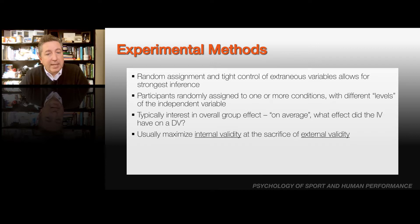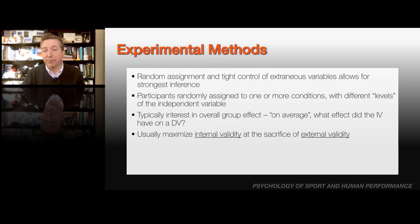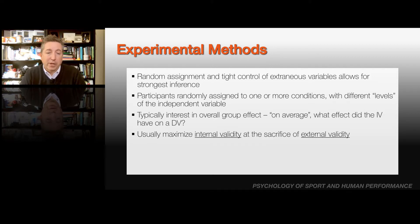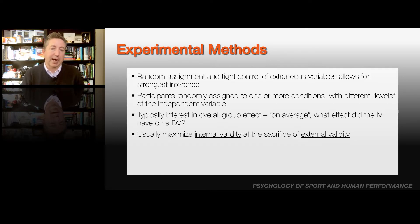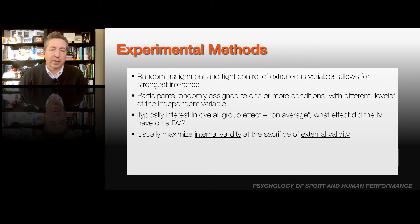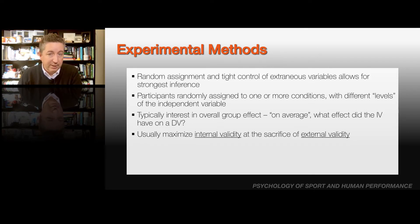Typically with experimental methods, our interest is in the overall group effect — on average, does the independent variable have an effect on the dependent variable? Experimental methods maximize what we call internal validity, meaning they limit other things that could cause the changes you observe. But they sacrifice external validity — how much what you did in the lab generalizes to the real world. The more a study has internal validity, the more limited the external validity is, and vice versa.